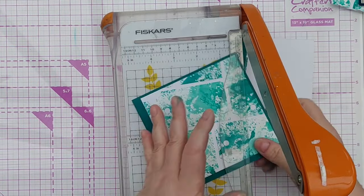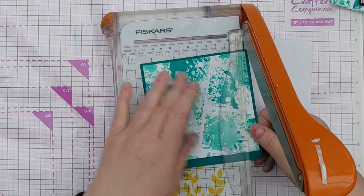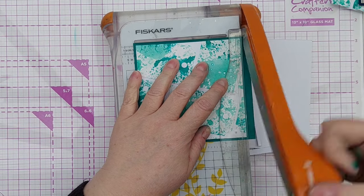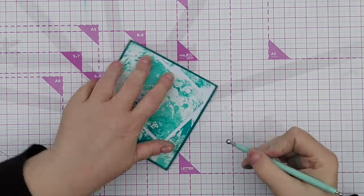To make the edges of my mat look as if they had been die cut, I got my embossing tool and just ran it down the edge of the mat and that beveled the edges and gave it that curvy die cut look.